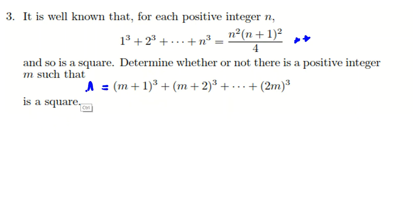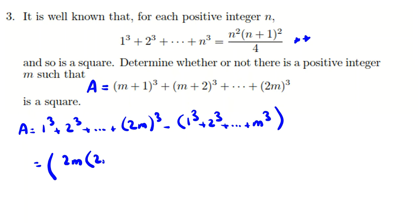So we say, if we want to calculate, let's consider A. A equals what: 1³ + 2³ + ... + (2m)³ - (1³ + 2³ + ... + (m)³). So it will be, if we use the formula, it will be 2m times (2m+1) over 2 squared minus m times (m+1) over 2 squared.